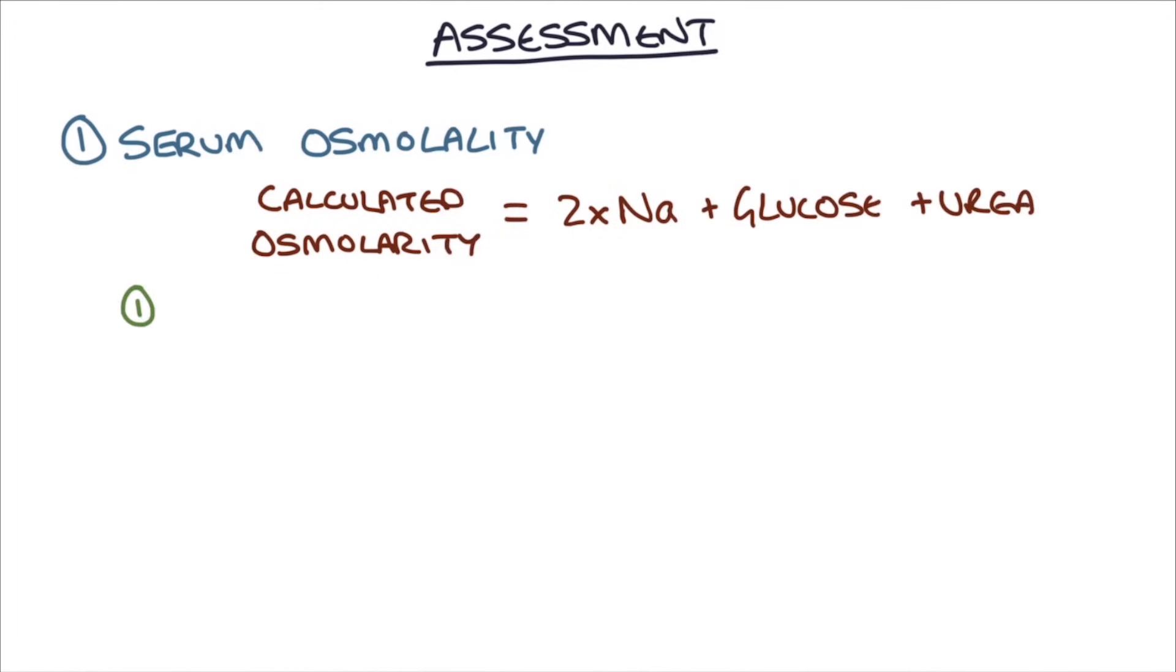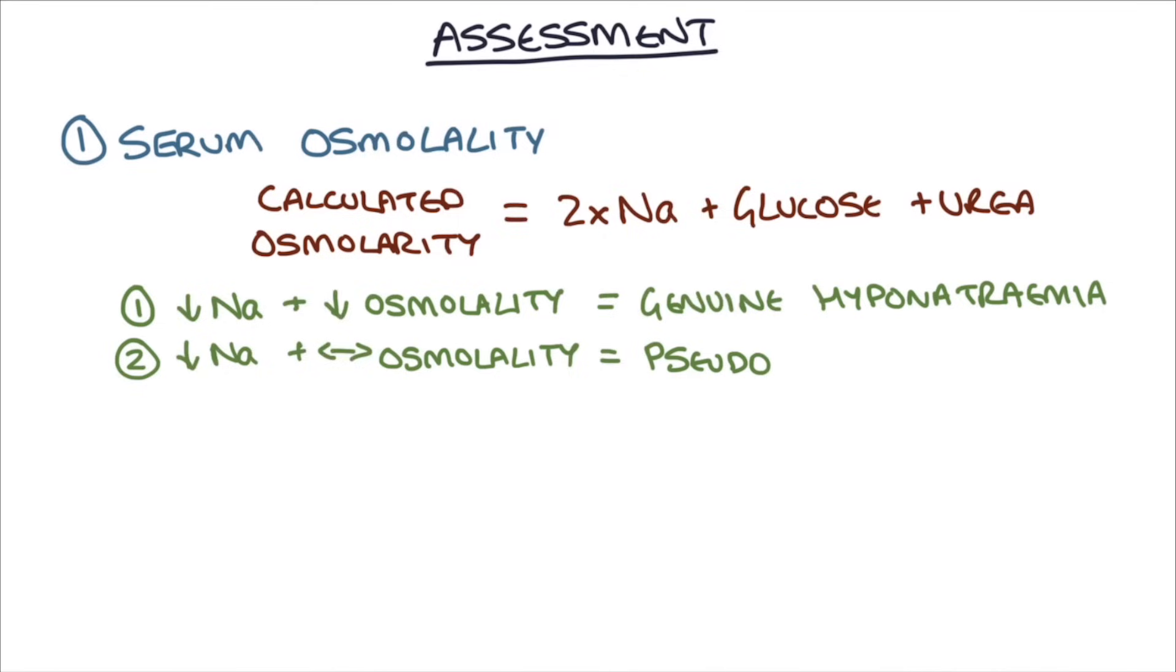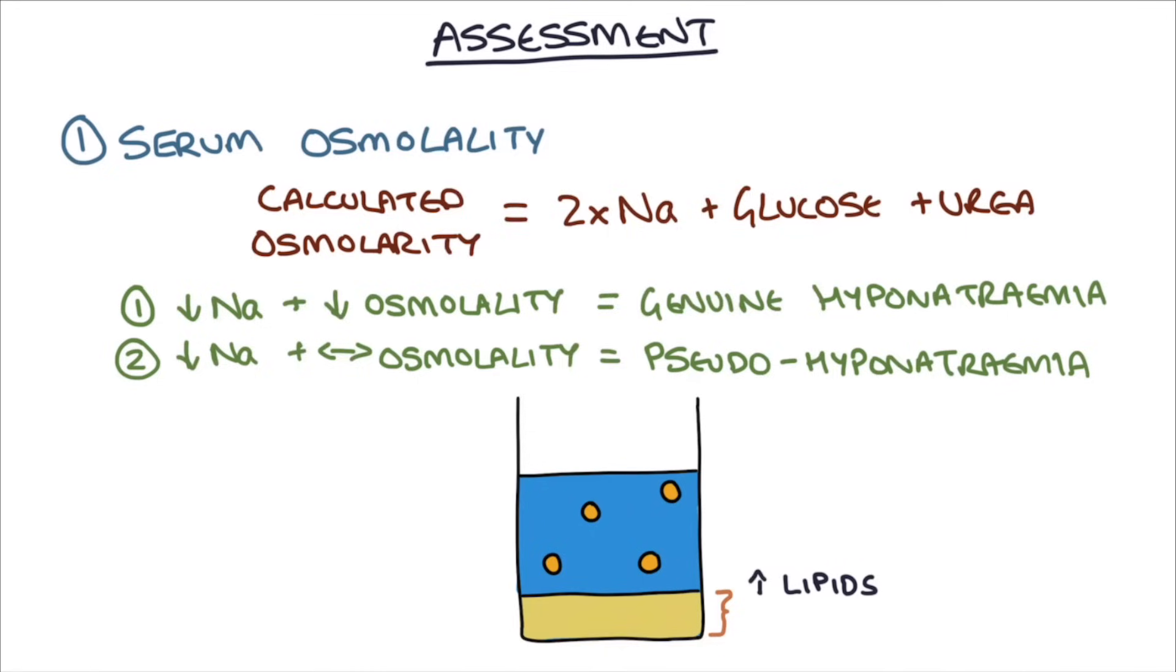If the patient has a low sodium and their serum osmolality is low, you know this is a genuine hyponatremia. The low sodium is causing a low osmolality. If the patient has a low sodium but their osmolality is normal, we call this pseudo-hyponatremia. This is where a high level of lipids, such as in hyperlipidemia, or proteins, such as in myeloma, take up a higher proportion of the blood volume and make the blood analyzer think there's a low sodium when, in fact, the sodium concentration would be normal.